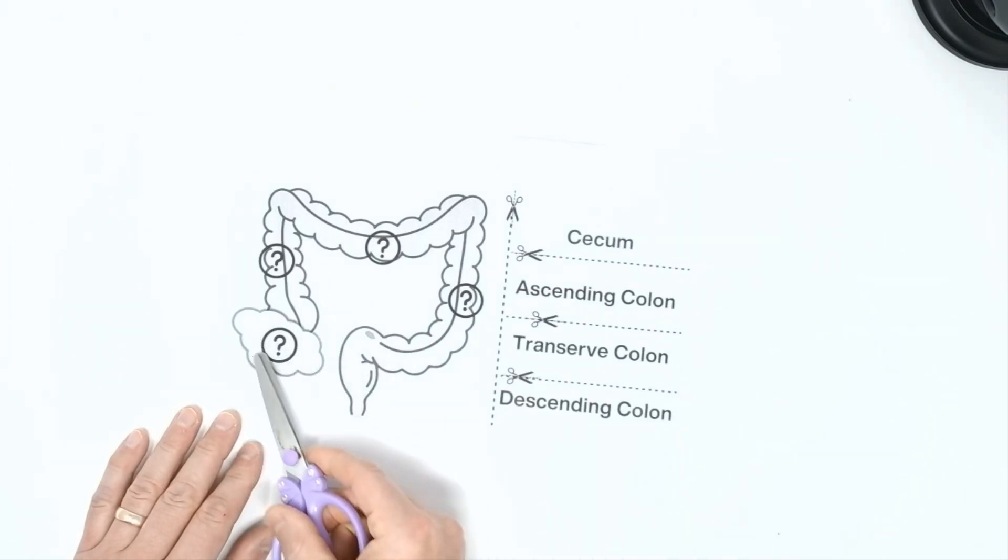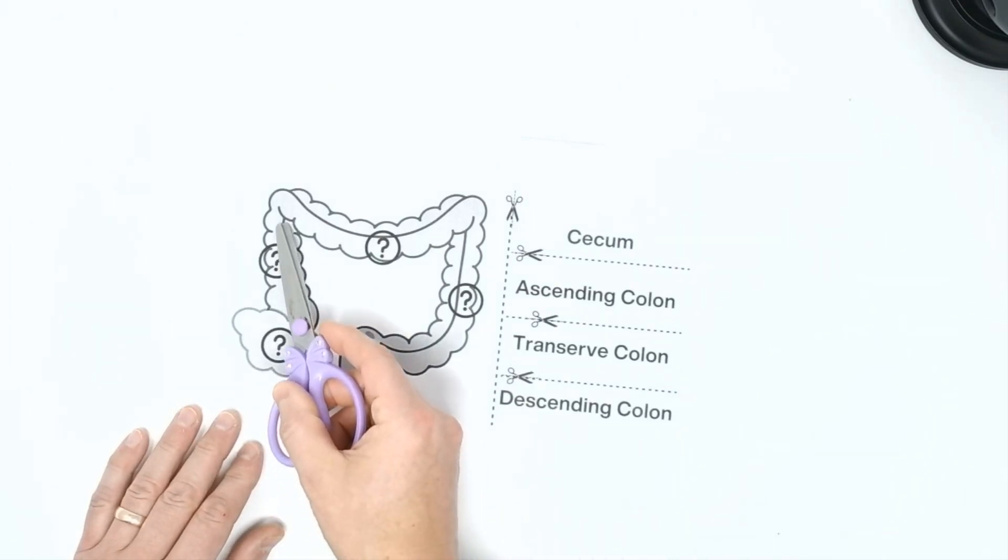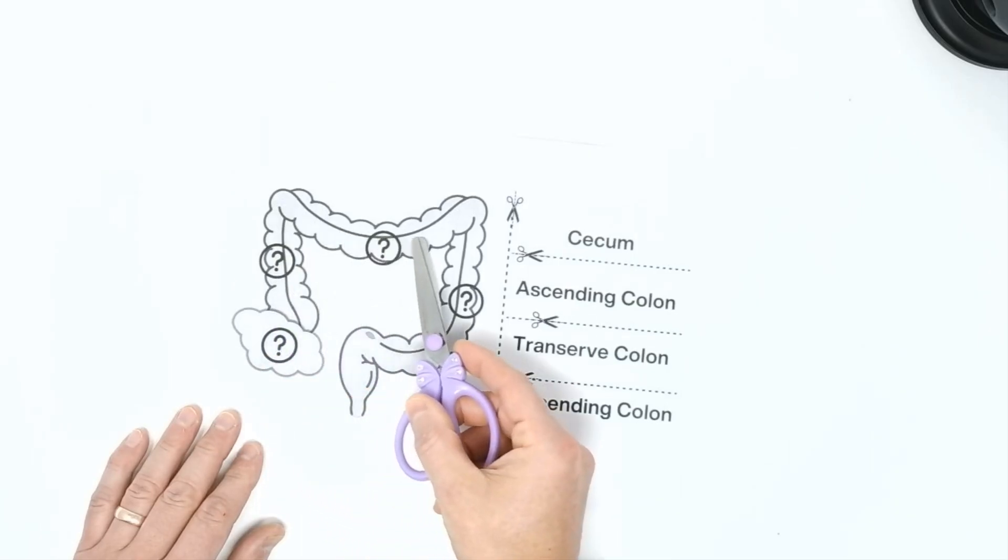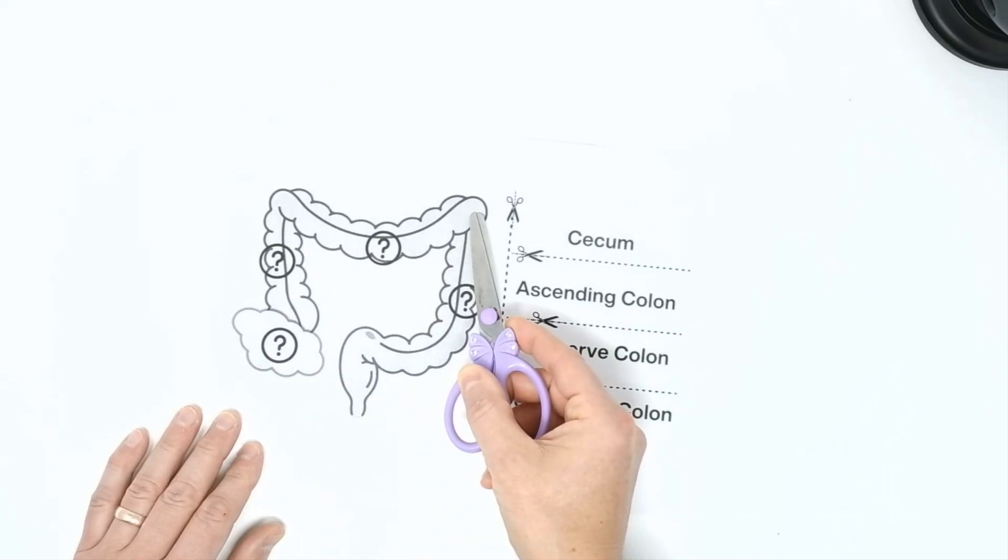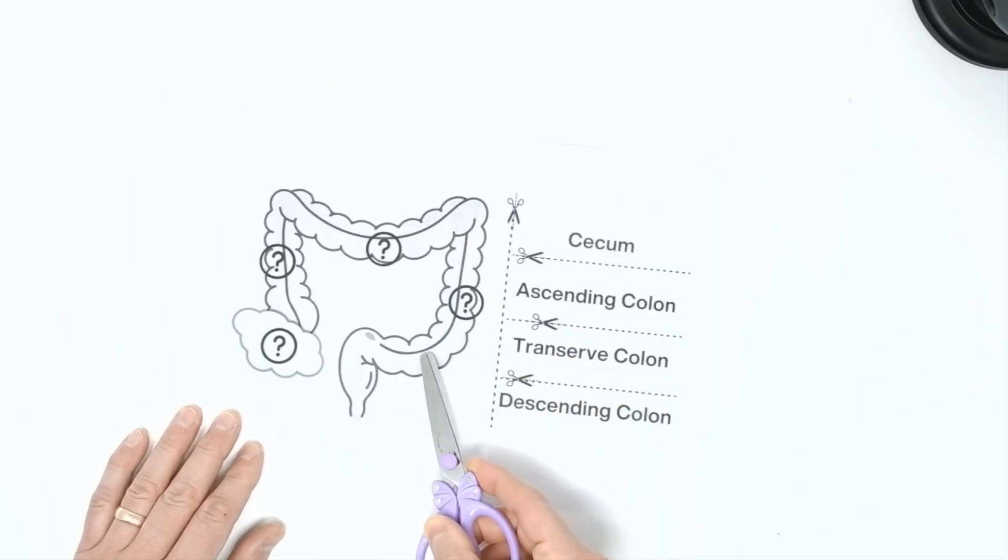We have our cecum, our ascending colon going up, our transverse colon going across, and our descending colon going down. And then, of course, this is where the doggy goes poop out here.